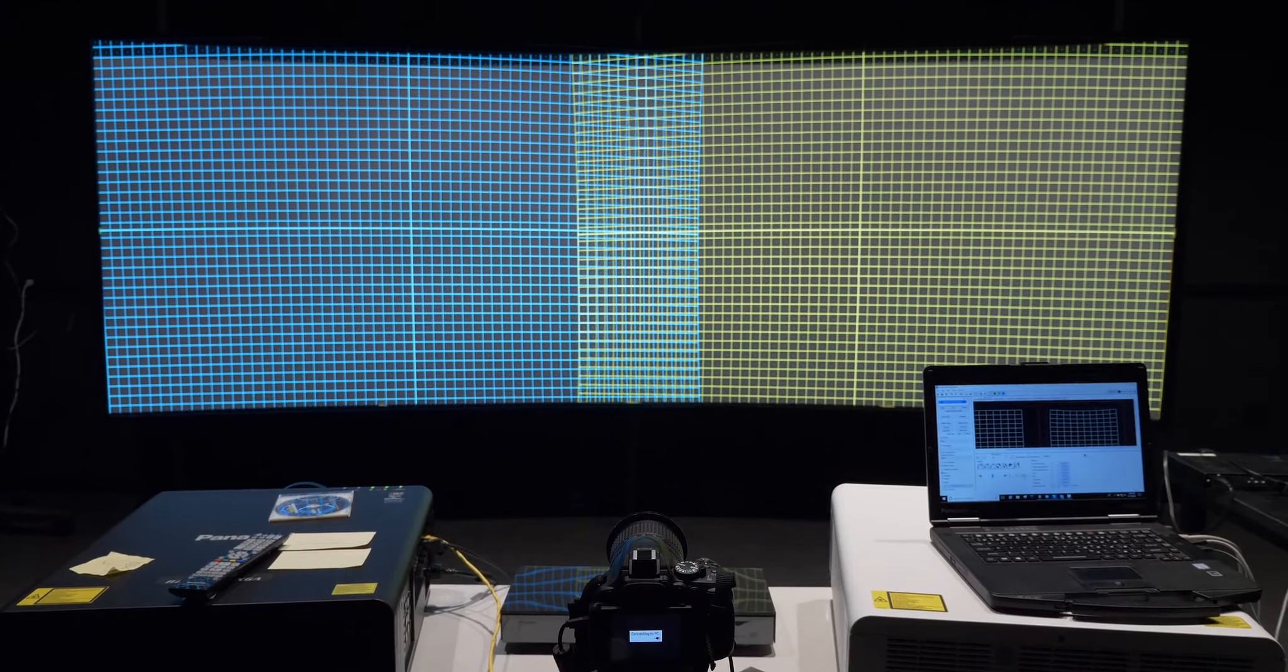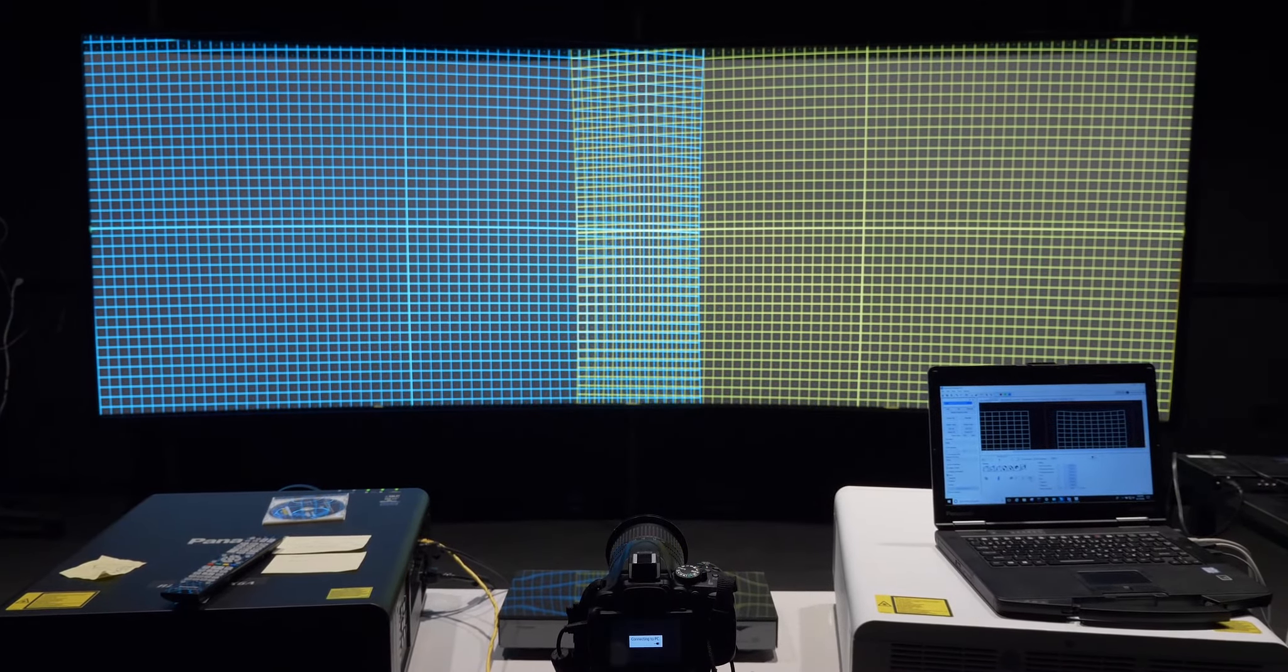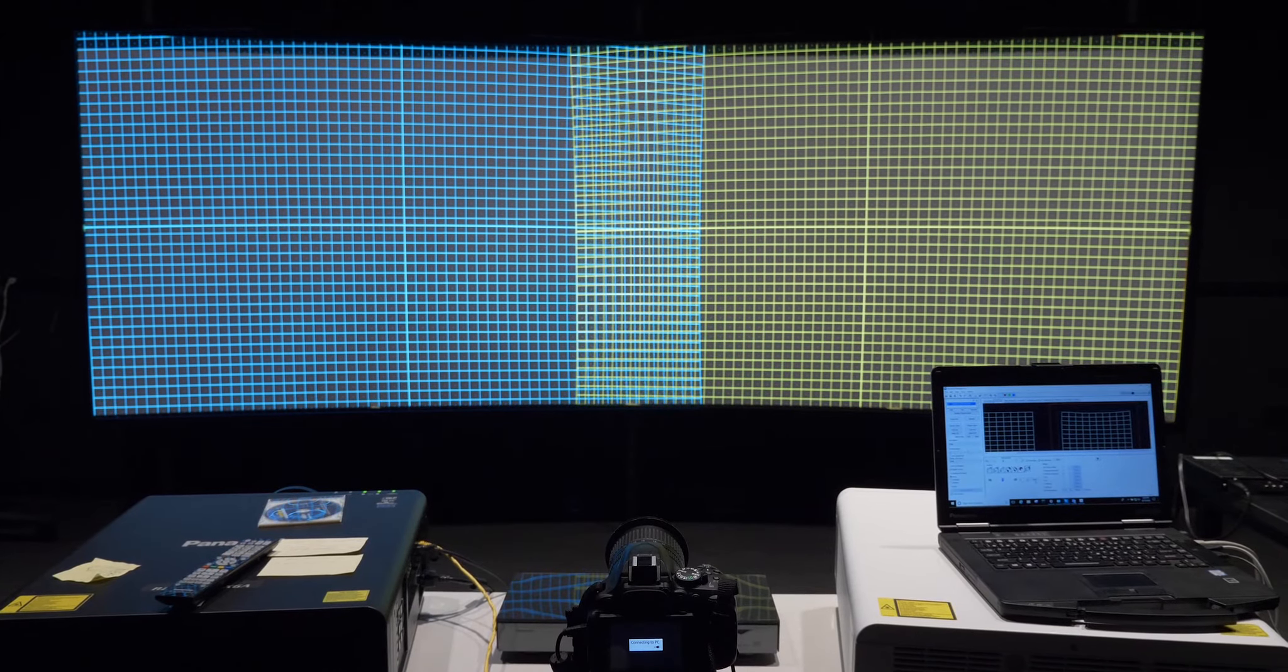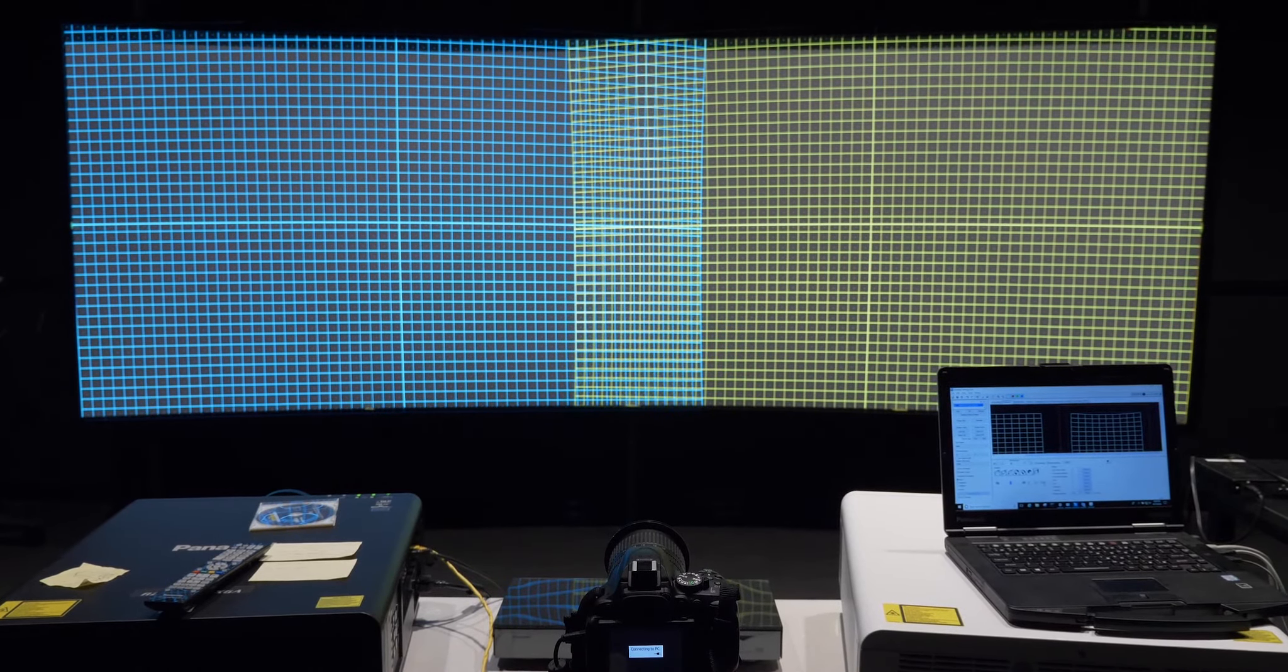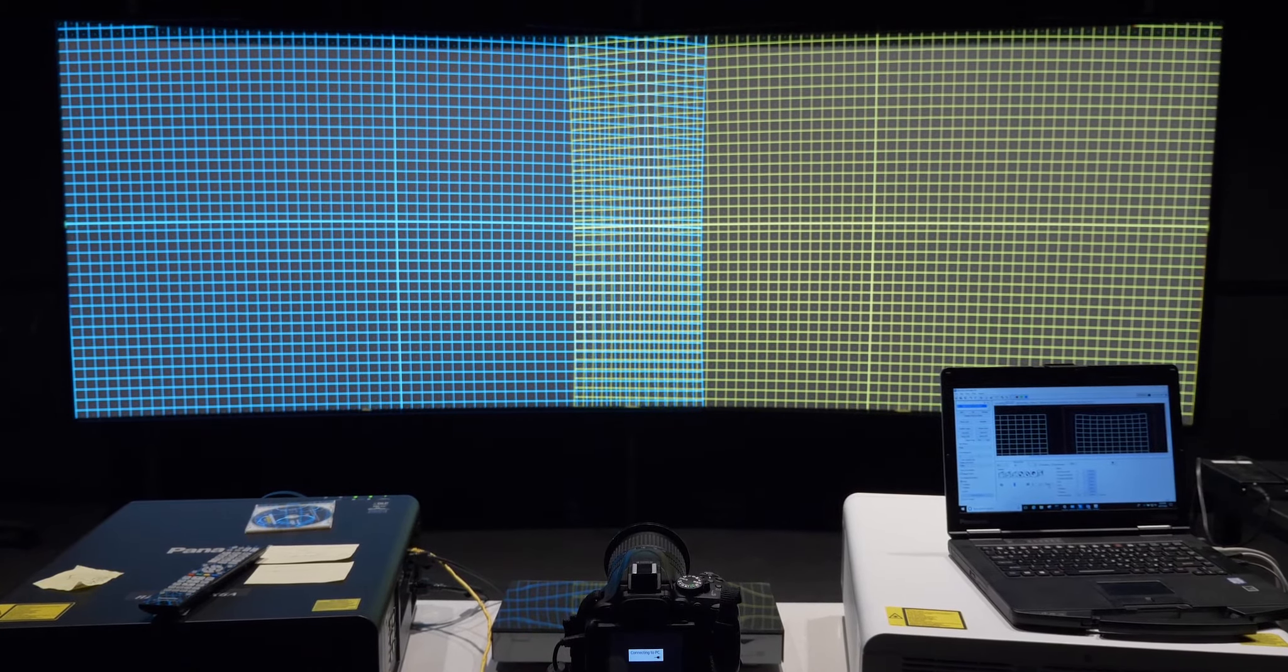Initially, all projectors must overshoot their target areas and overlap with each other for edge blending. Most times, as you map, you'll be reducing image size, so you must ensure coverage of the entire mapped area.